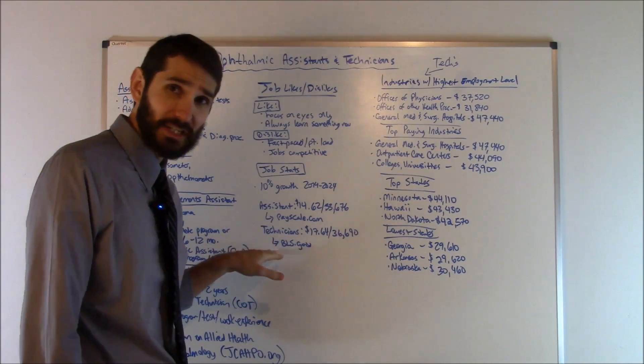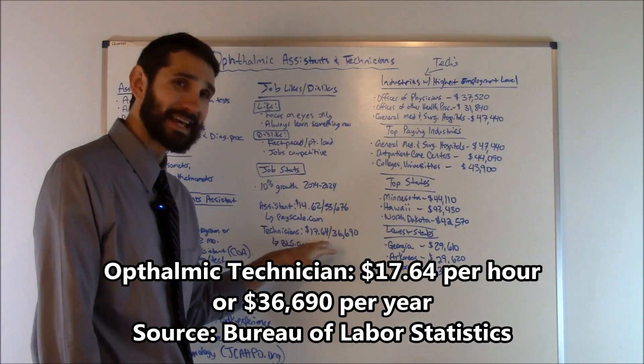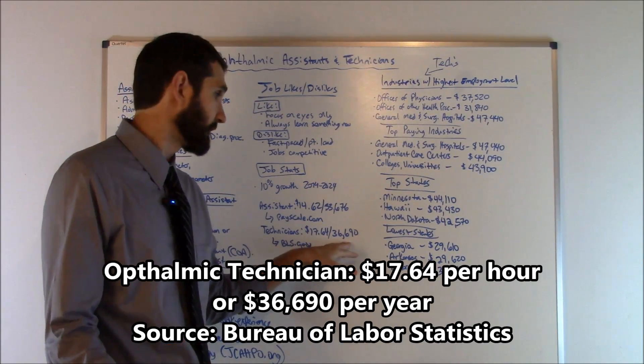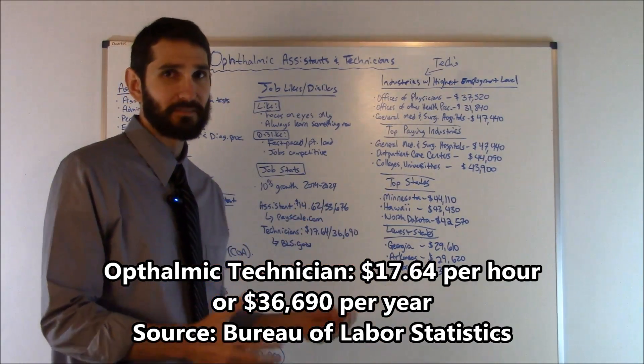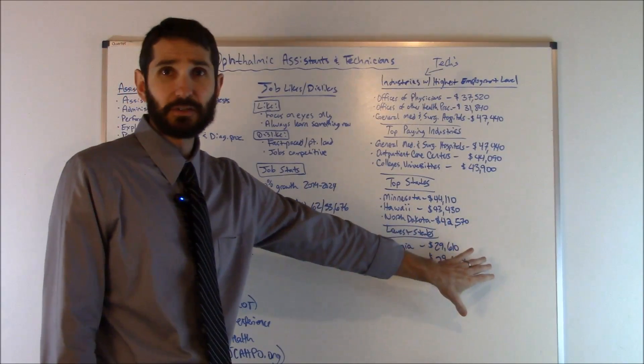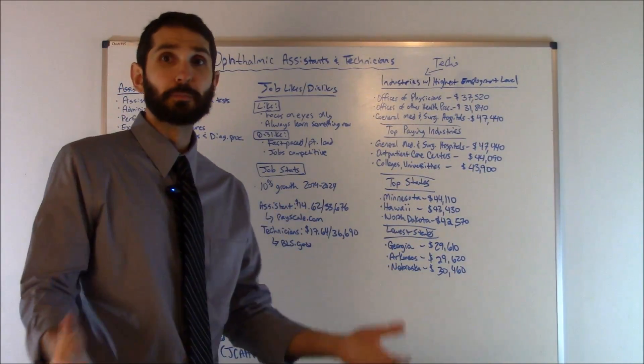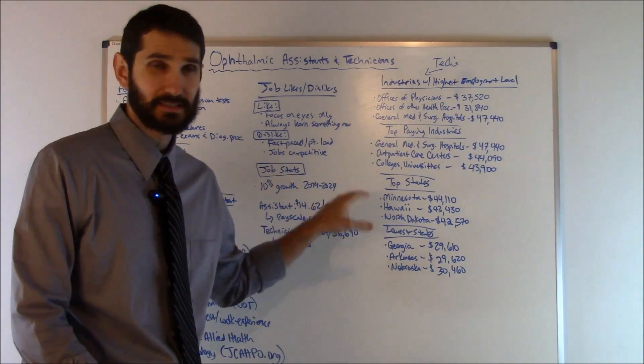For a technician, according to the Bureau of Labor Statistics, the average hourly wage was $17.64, and the average salary was $36,690. Now, I'll go through some additional salary statistics here in just a moment, but these are only available for the technician. The Bureau of Labor Statistics did not have the detailed salary stats for the assistants.